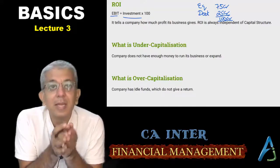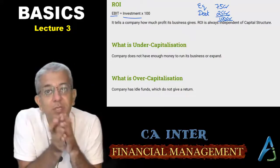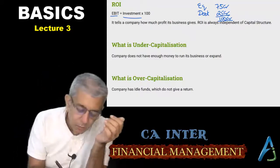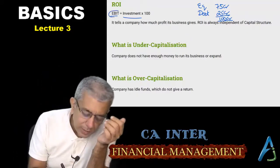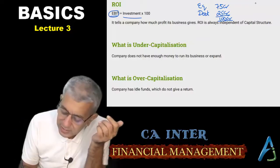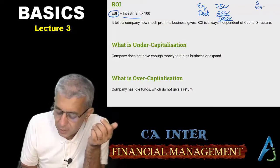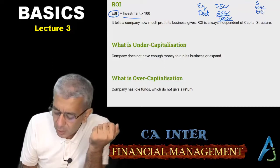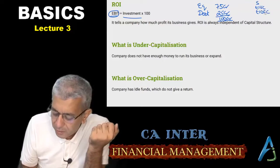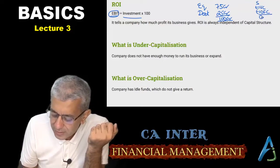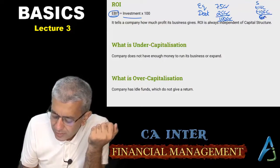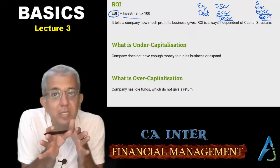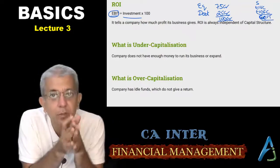Do remember that interest is a financial expense that depends upon your capital structure. How will you get EBIT in real life? You take sales, subtract your variable cost, then subtract your operating fixed cost, and you will arrive at something called EBIT. EBIT is how much return your business is giving you.